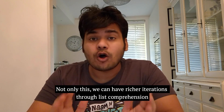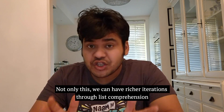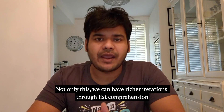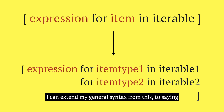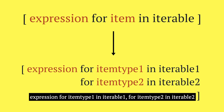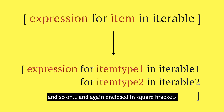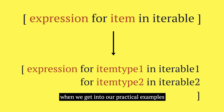Not only that, we can also have richer iterations through our list comprehension. I can extend the general syntax to: expression for item_type_1 in iterable_1 for item_type_2 in iterable_2, and so on, again enclosed in square brackets. We are going to get a better perspective on this when we get into our practical examples.